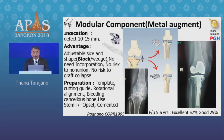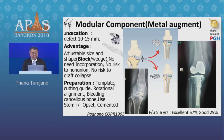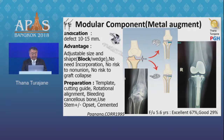Modular components seem to be everyday practice that you are familiar with, though cost is a concern. The advantages are that they are adjustable, require no incorporation, carry no risk of non-union, and have less risk of graft collapse. We prefer the block. In terms of using modular components and stems, we need good pre-operative preparation, templating, and we also need to think about the stem offset.